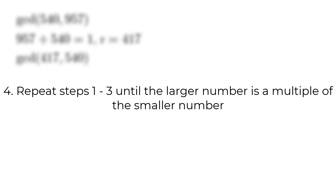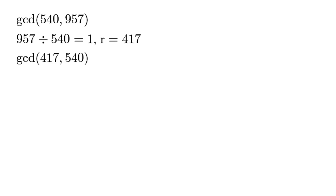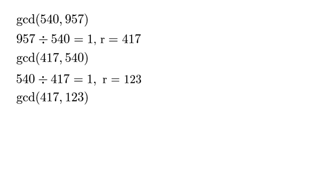We repeat this 3-step process until the larger number is a multiple of the smaller number. So, let's start by identifying the larger and smaller number again. Now, the larger number is 540 and the smaller number is 417. So, we divide 540 by 417. This gives us 1 with a remainder of 123. Finally, we replace the larger number, in this case 540, with the remainder, which is 123. So, now we want to find the GCD of 417 and 123.